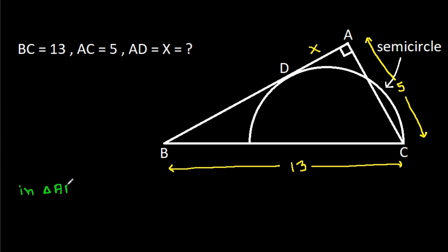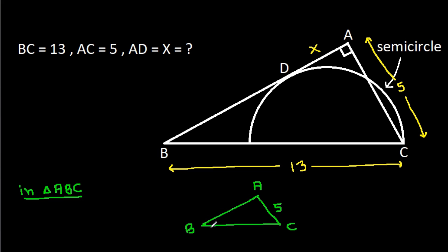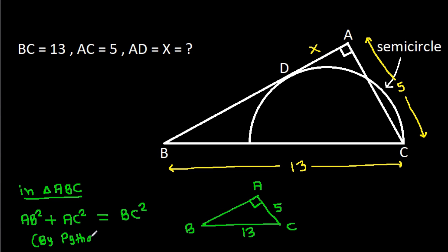In triangle ABC, with vertices A, B, and C: AC is 5, BC is 13, and this angle is 90 degrees. So, AB squared plus AC squared will be equal to BC squared, by the Pythagorean theorem.